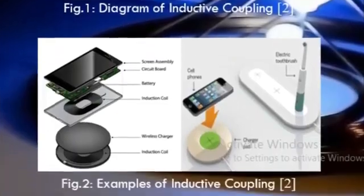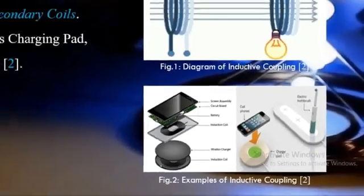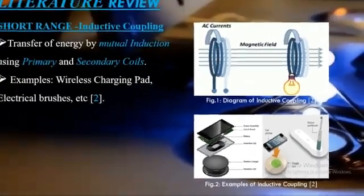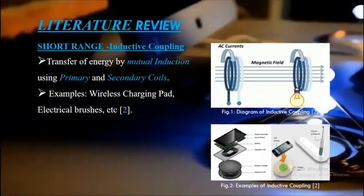Similarly, wireless charging pads and electric toothbrushes are some more examples of short-range power transmission. Another type of WPT is medium range, where power is transferred at a distance of 2 to 4 or 5 meters using two techniques.